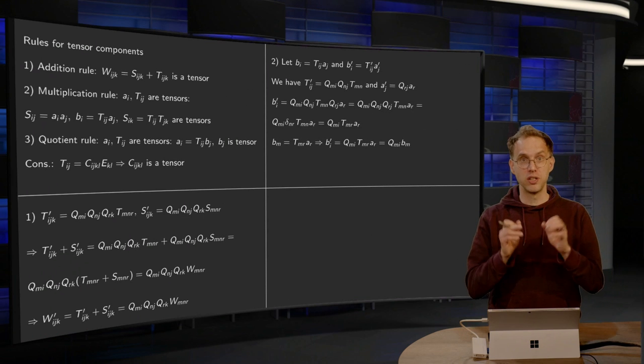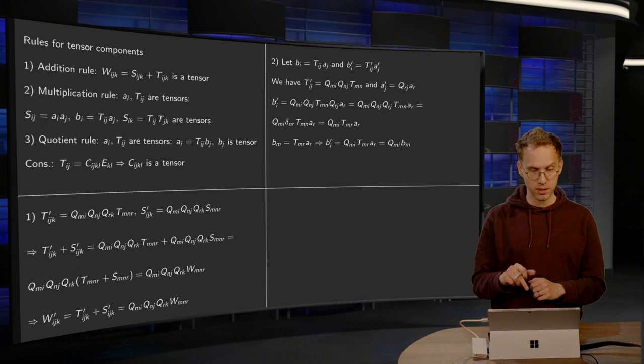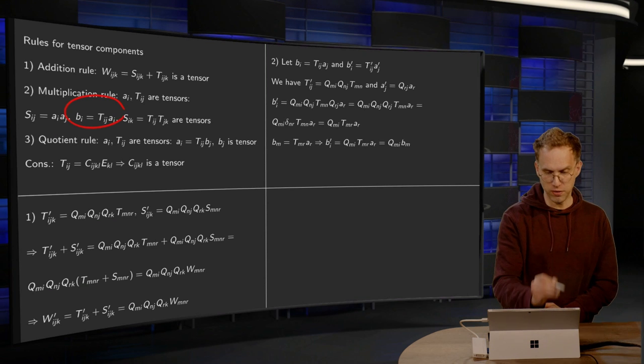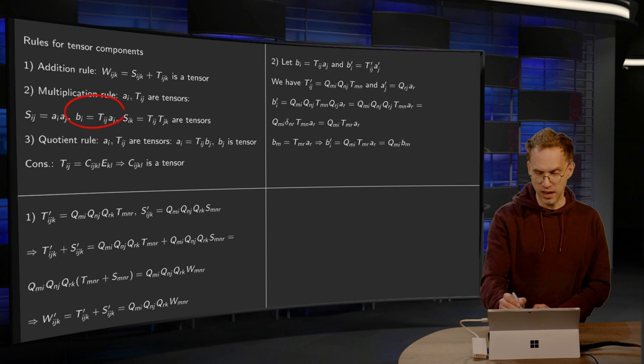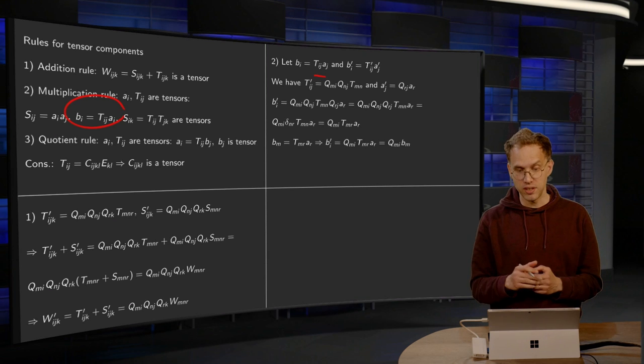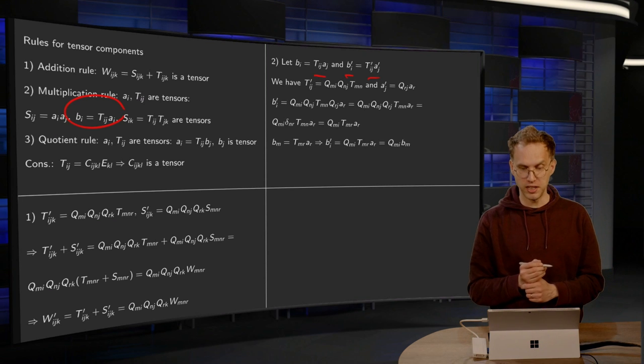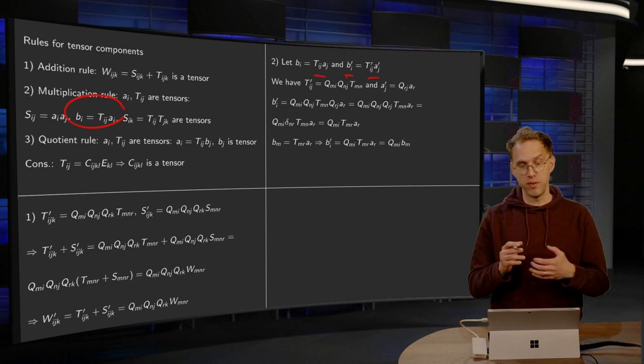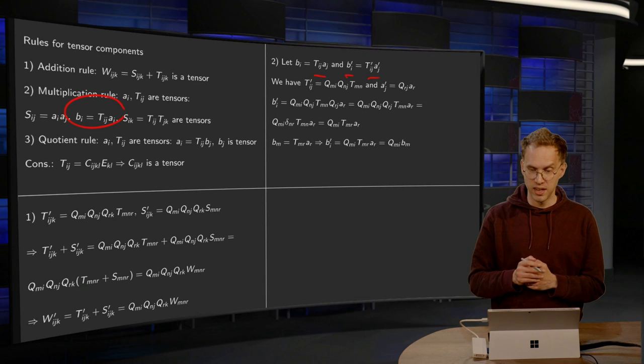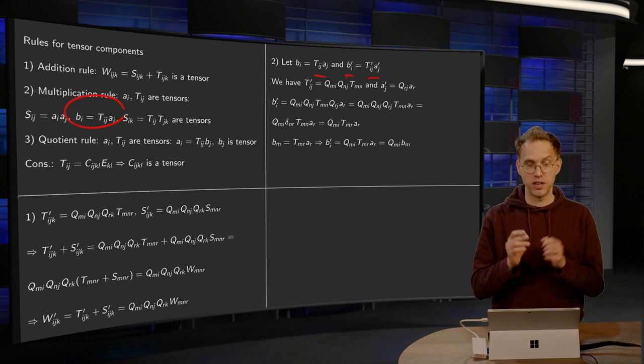Multiplication rule is proven in a similar way. Let's do this one. So we have bi equals Tij aj, and we define our bi prime in a similar way as Tij prime times aj prime.